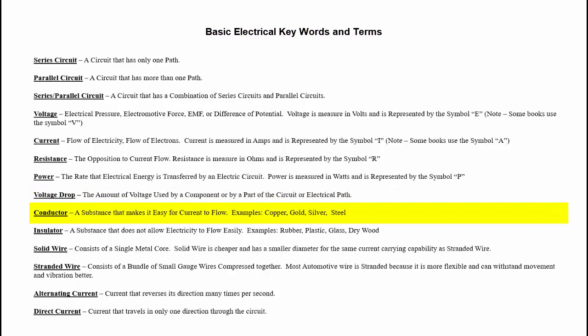A conductor is a substance that makes it easy for current flow. Examples would be gold, copper, silver, steel. Anything that will allow current to flow more easily is considered a conductor.